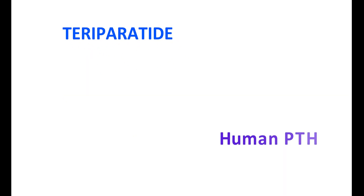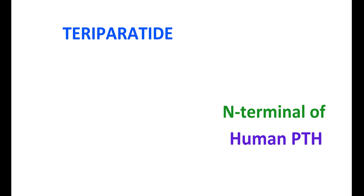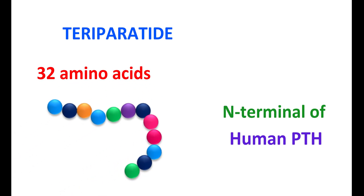How is this possible? Teriparatide is derived from human parathyroid hormone — specifically, 32 amino acids from the N-terminal end of PTH are included in teriparatide, which allows it to act like PTH. However, this structure alone is not responsible for its bone-forming action. Teriparatide has a half-life of less than one hour and is given once a day, which may be one reason for its action on bone formation.